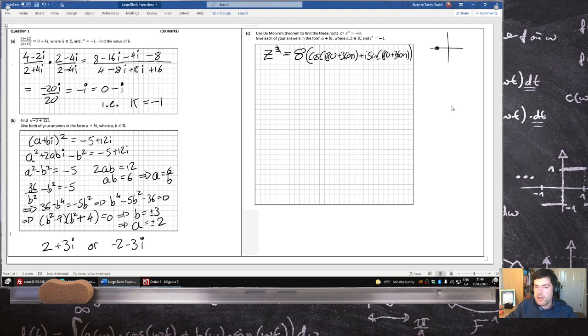But then we have to cube root it. So z would be 2 times cos, and then each of these angles gets multiplied by a third, so that would be 60 plus 120n plus i sine 60 plus 120n.